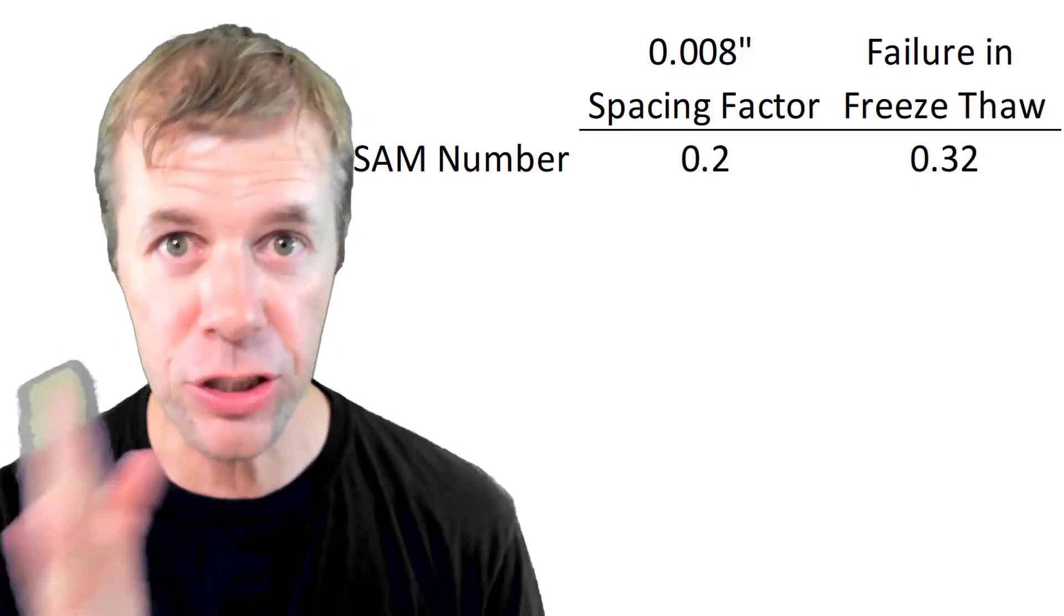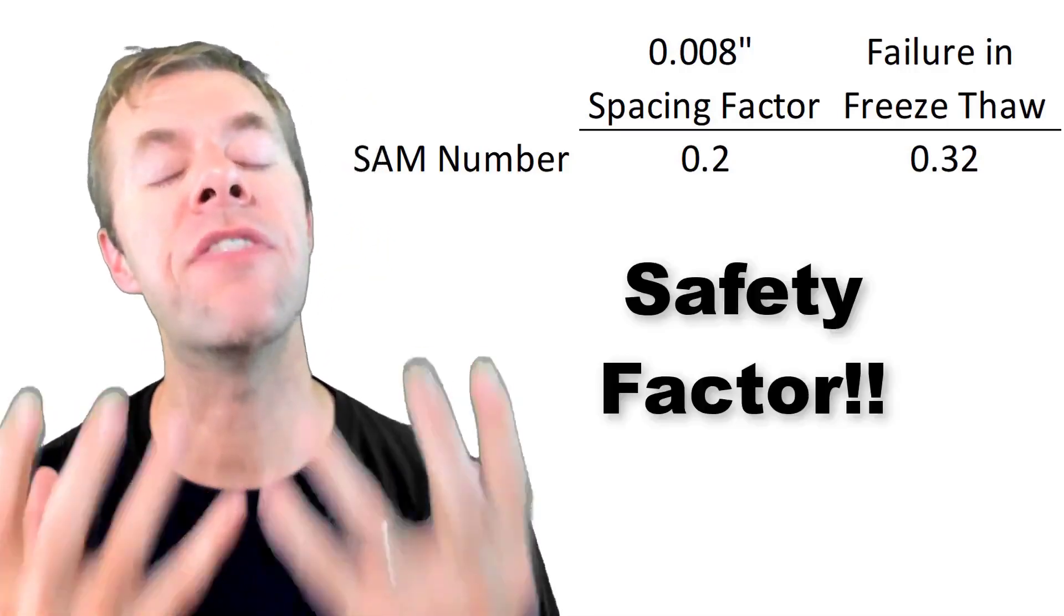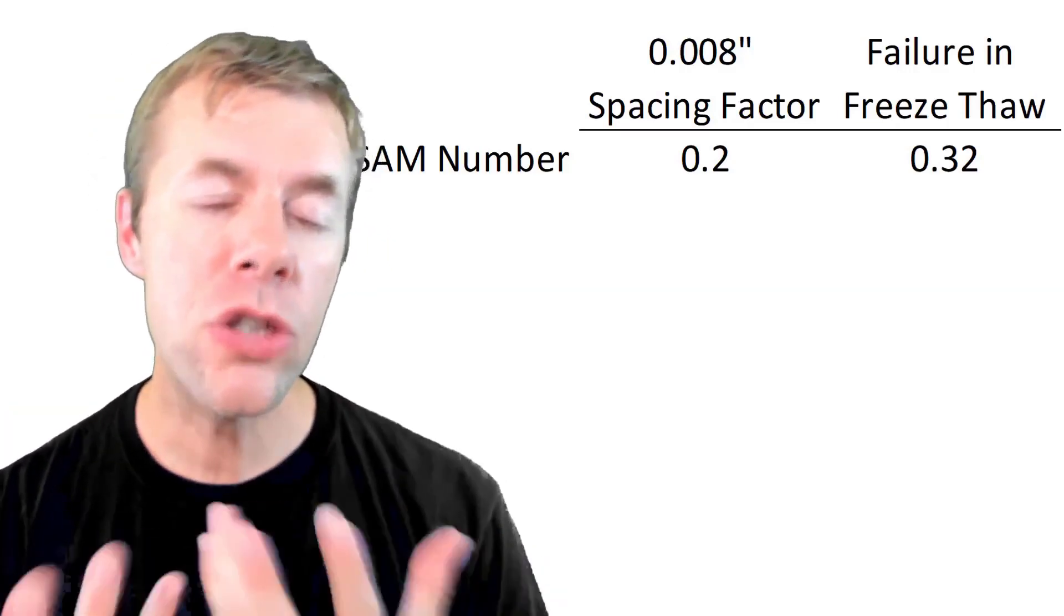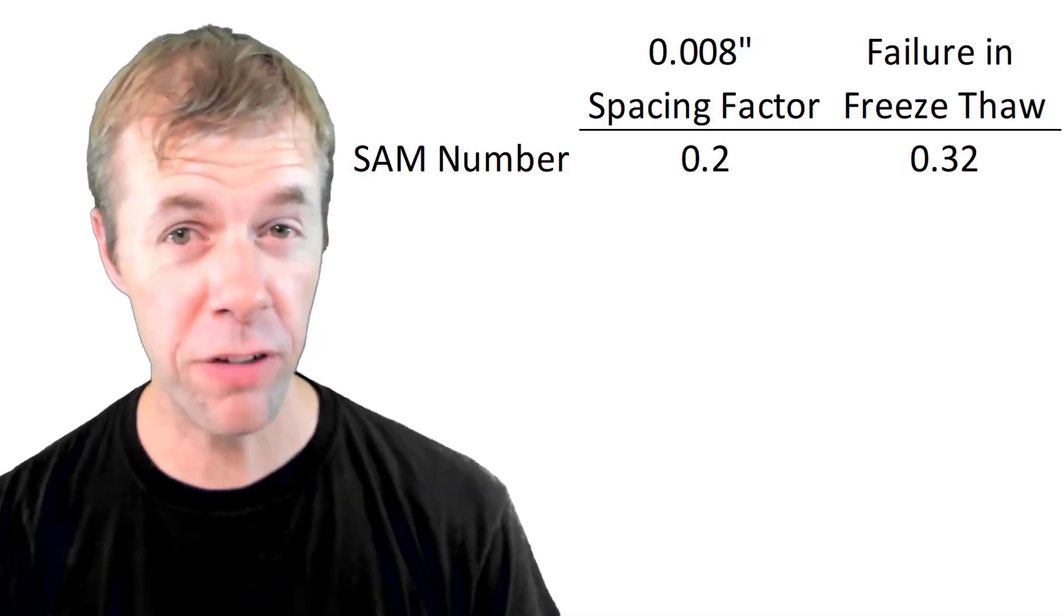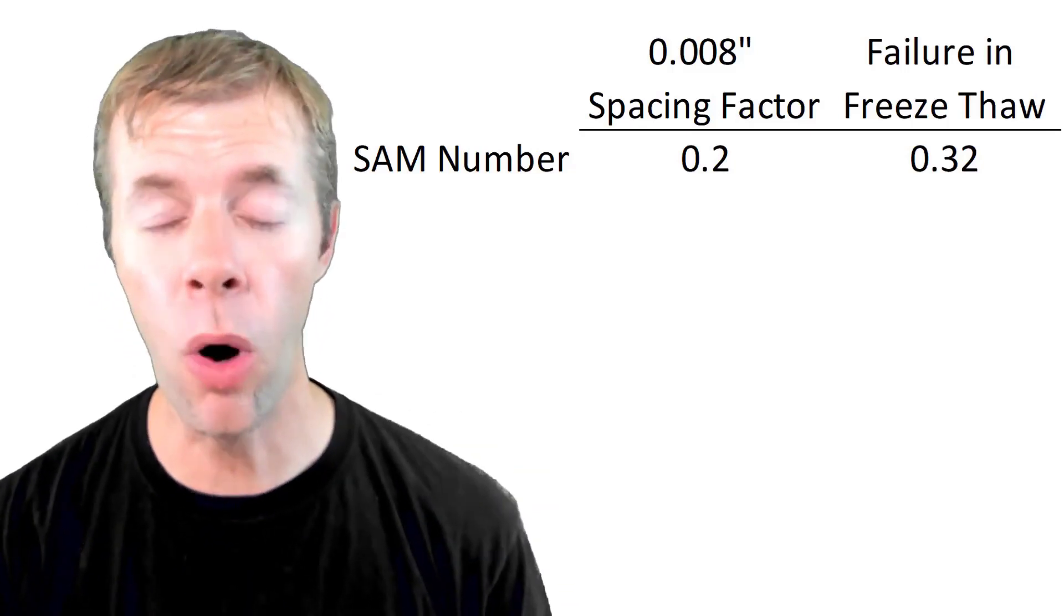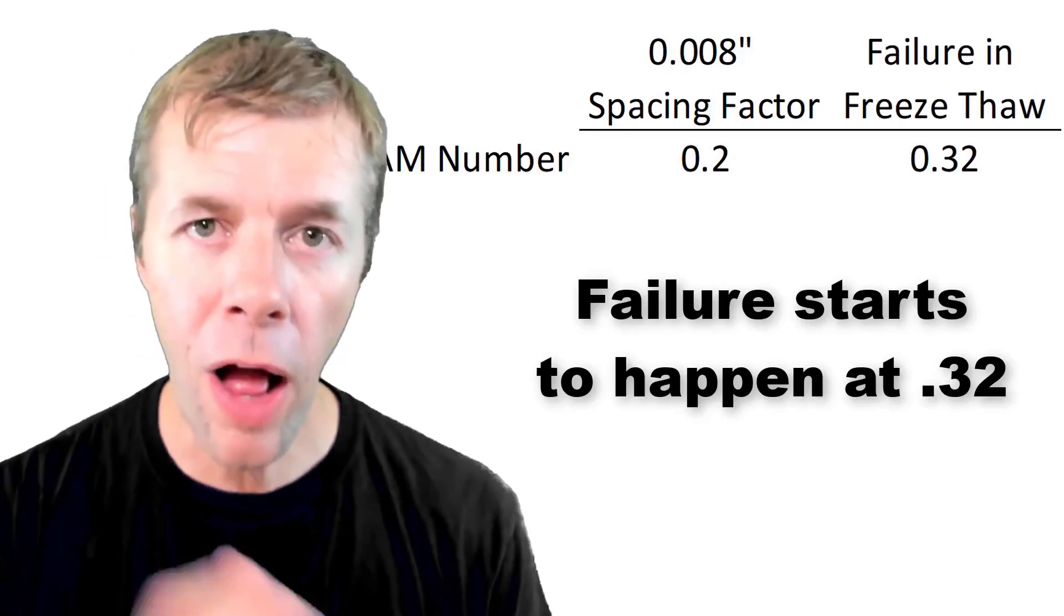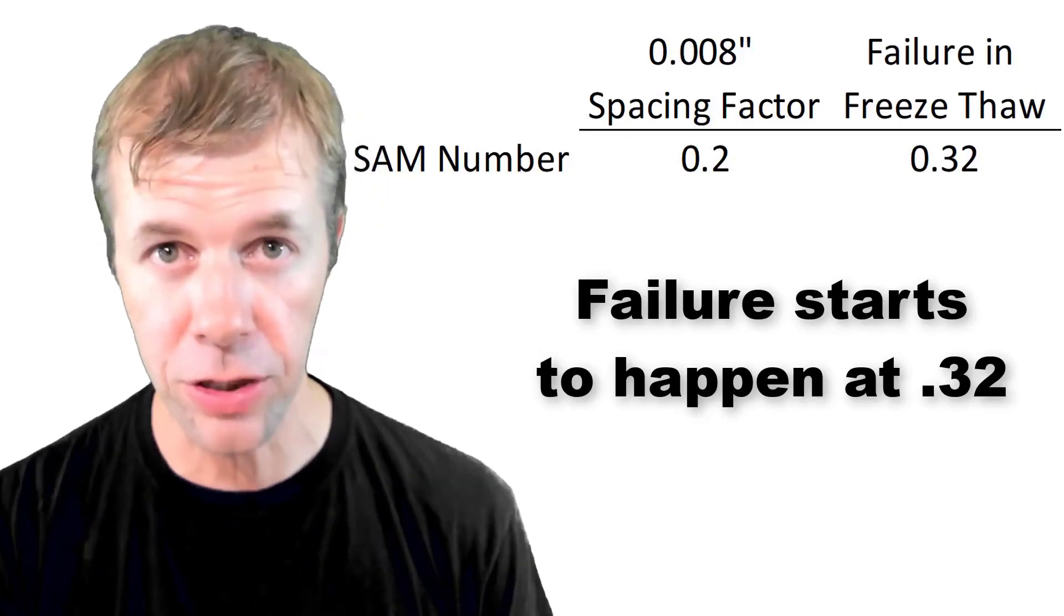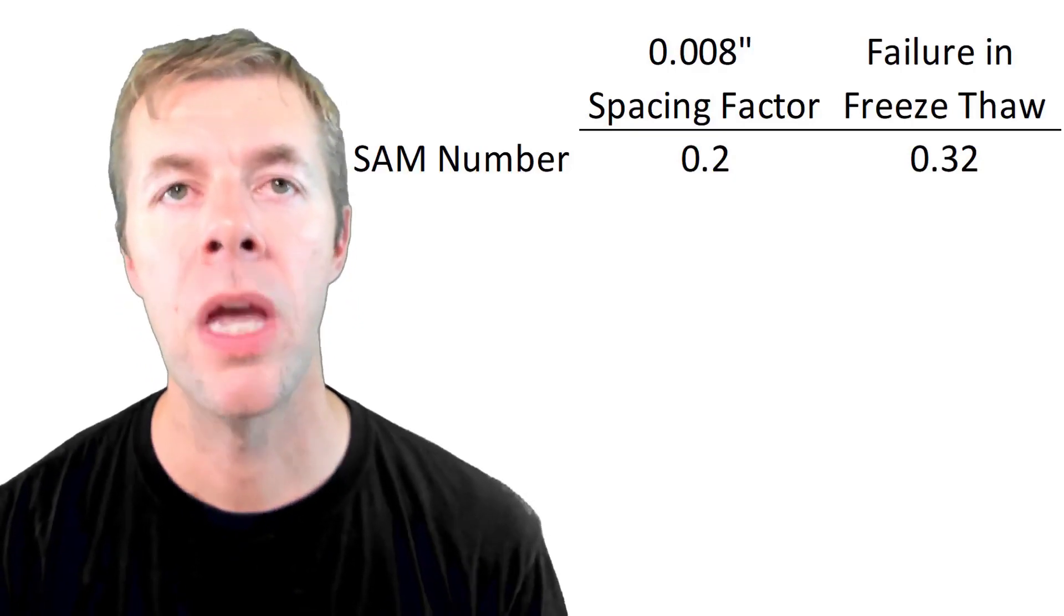Well, people know we don't want to live on the edge of danger. We want to be away from the edge. We need a safety factor. Historically people have been using a spacing factor of about 0.008, which would put you at a SAM number of 0.20. Where failure starts to happen is about 0.32, and I'm going to round that to 0.30 for our specifications because it's a nice round number and it's a little bit conservative.